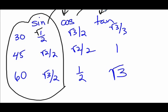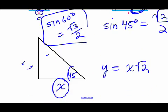These are the special angles — 30, 45, and 60. If you end up with reference angles that are one of these, the trig values are going to be from this chart. We might have to change the sign depending on which quadrant we're in, but the absolute values will be the same.